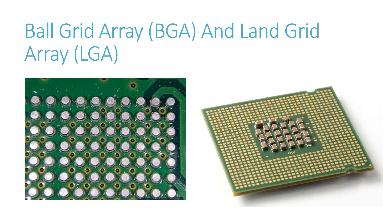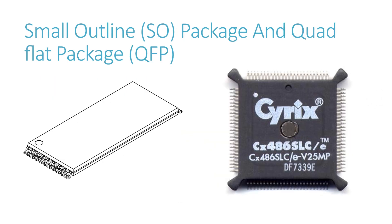Land grid array (LGA) packages are designed to either fit in a socket or to be soldered down using surface mounting technologies. The small outline package (SOP) is the most widely used package for low I/O applications because of its extremely low cost. The quad flat package (QFP) is an extension of the SOP with larger I/O connections.